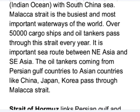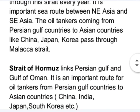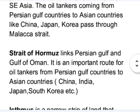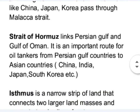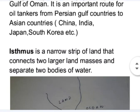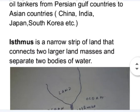Oil tankers coming from Persian Gulf countries to Asian countries like China, Japan, and Korea pass through the Strait of Malacca. Another example is the Strait of Hormuz, which links the Persian Gulf and the Gulf of Oman. It is an important route for oil tankers from Persian Gulf countries to Asian countries like China, India, Japan, and South Korea.